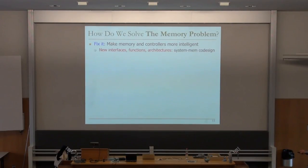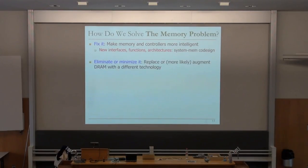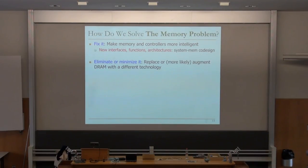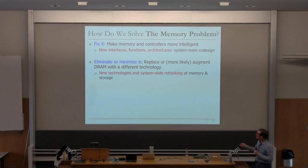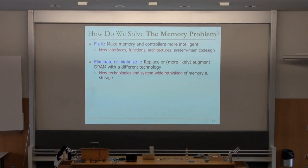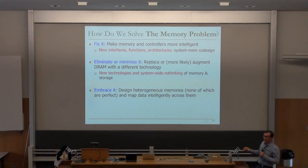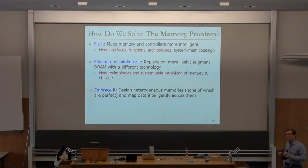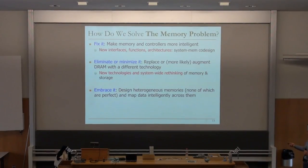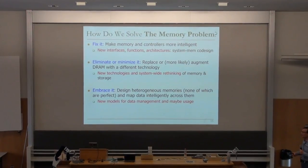This course will focus a lot on the memory problem. One solution was to make memory controllers more intelligent, design new interfaces, maybe new functions inside memory, new architectures — I call this system-memory co-design. The second solution is eliminating or minimizing the problem, looking at different technologies that may not have some of these problems. This enables new technologies and system-wide rethinking of memory and storage. Phase change memory is a very good example. The third solution direction is embracing the problem, designing heterogeneous memories — some are good at one thing, others at other things — and mapping data intelligently across them.